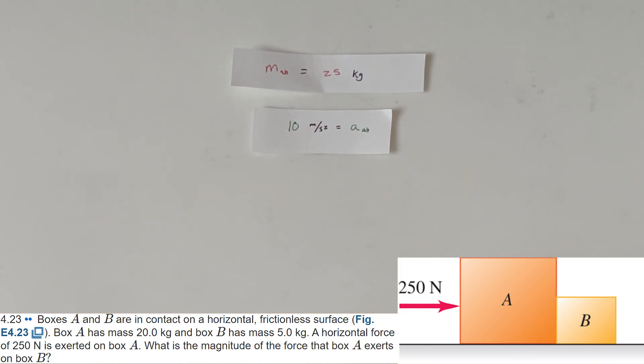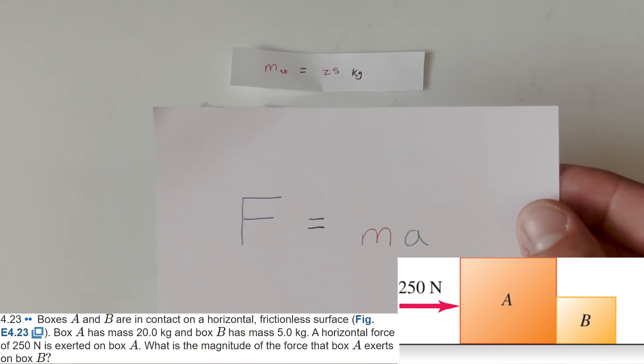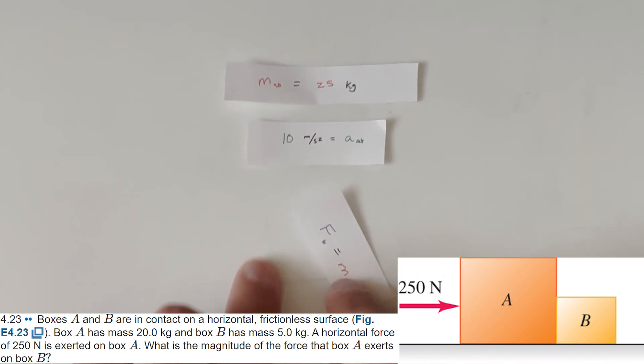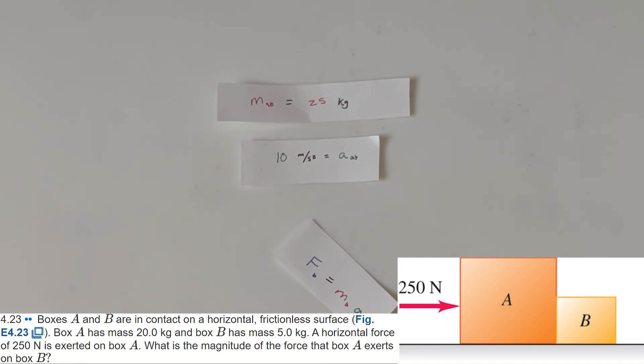So now that we have that piece of information, we can finally go back to this equation. Force is equal to mass times acceleration. And this time, we're going to go to just block B itself. Force of B, right? This is what we're solving for. This is the force on B exerted by block A is equal to the mass of B times the acceleration of B.